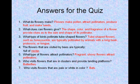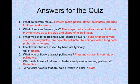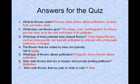Number 1 — What do flowers make? Flowers make pollen, attract pollinators, produce fruit, and make seeds. Number 2 — What clues can flowers give? The shape, color, and fragrance of a flower provide clues as to the size and shape of its pollinator. Number 3 — Tube-shaped flowers such as honeysuckle are typically pollinated by animals with a long beak, proboscis, or tongue. Number 4 — The flowers visited by bees are typically full of nectar. Number 5 — Fragrant, showy flowers attract pollinators. Number 6 — Butterflies visit flowers that are in clusters and provide landing platforms. Number 7 — Bats visit flowers that are pale or white in color.